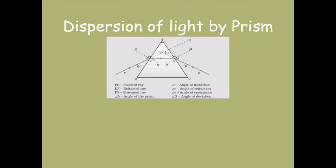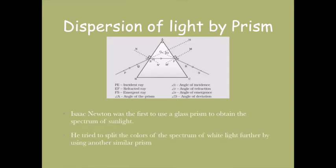Isaac Newton was the first to use a glass prism to obtain a spectrum from sunlight. He tried to split the seven colors further by using another small prism. However, he couldn't get more colors.